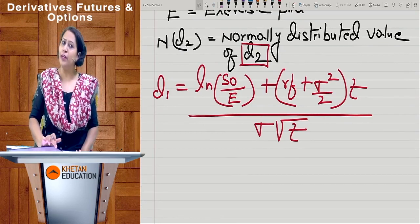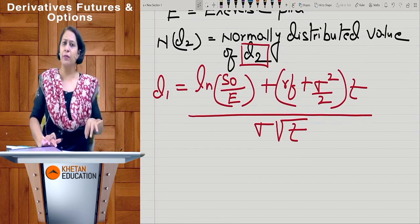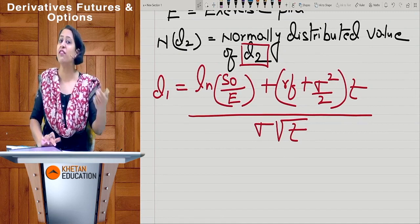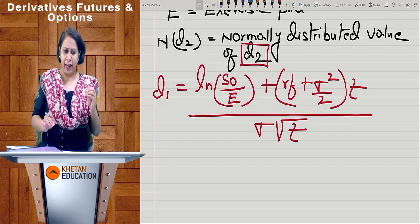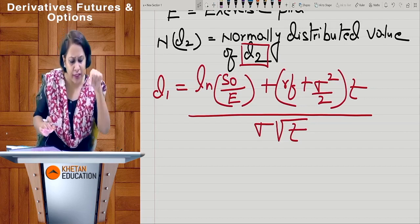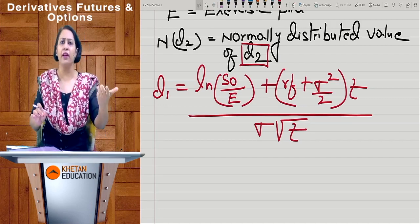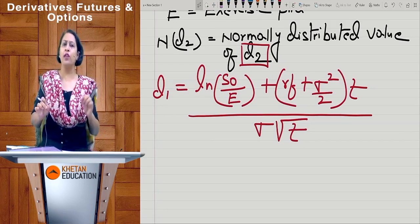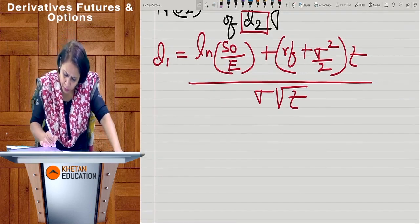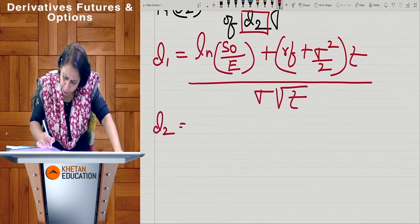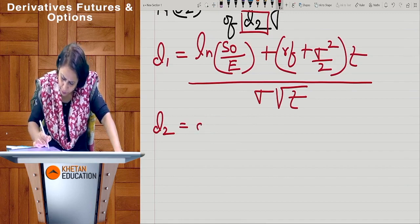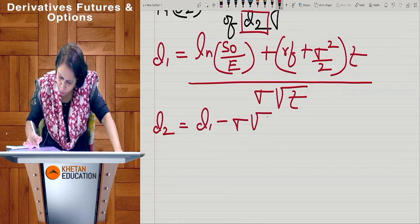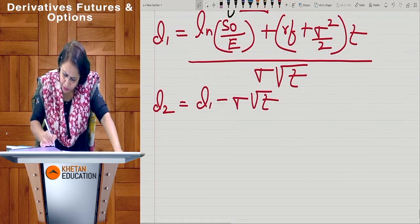The value of D1 and D2 are looked up in the Z-table the same way you look for a Z-value — one-tail, two-tail, or cumulative. When you calculate D1 and look that value up in the Z-table, it becomes N(D1). These are probability values. D2 = D1 minus σ√T.